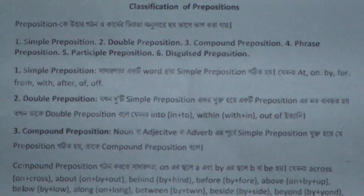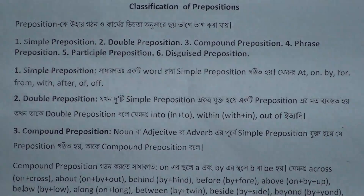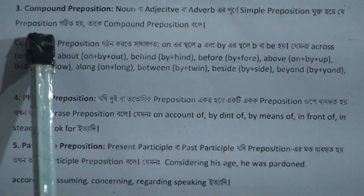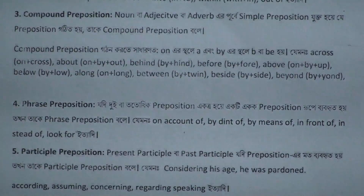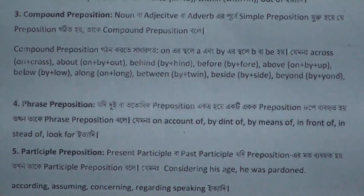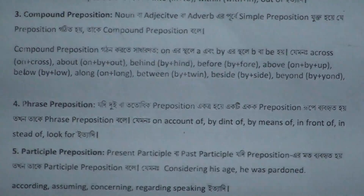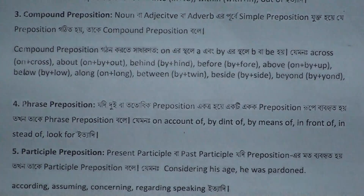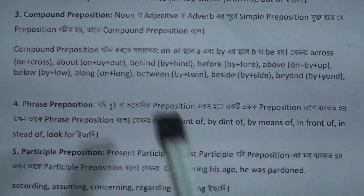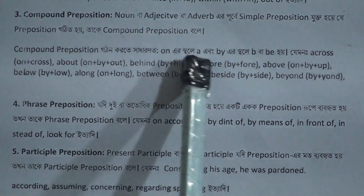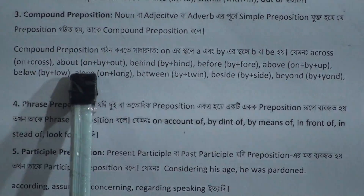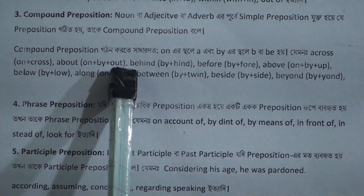The third type is compound prepositions, where simple prepositions are added to nouns, adjectives, or other words to form compound prepositions. For example: on plus cross gives across; by plus hind gives behind; by plus for gives before; on plus by plus up gives above; by plus long gives below; on plus long gives along; by plus twin gives between; by plus side gives beside; and by plus yont gives beyond.